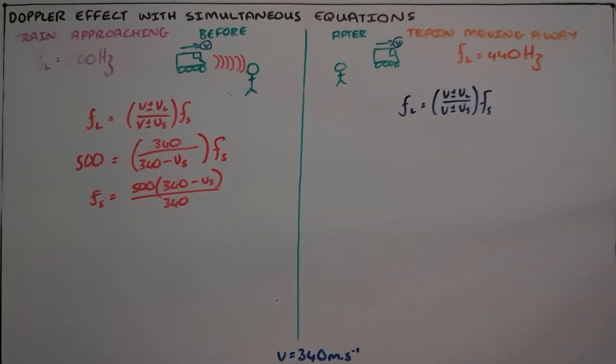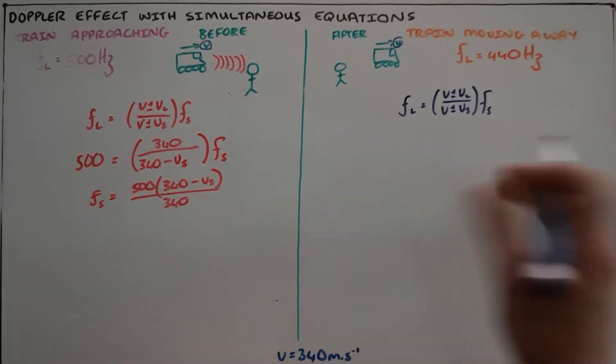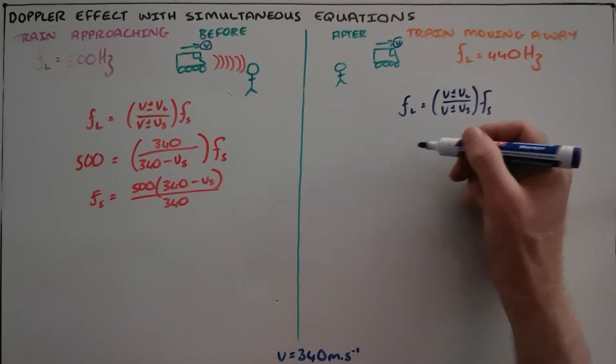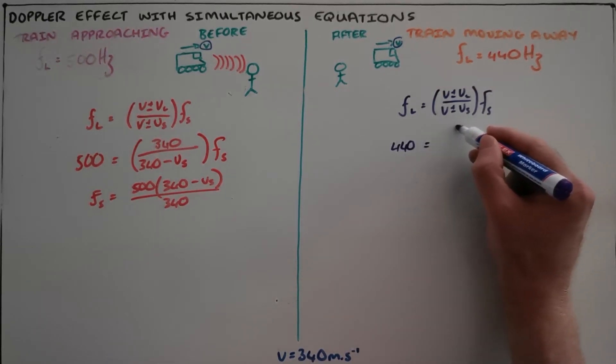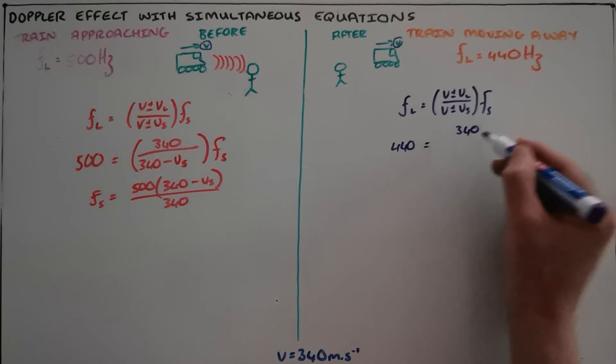We can then do the same thing for the second instance, that being the train moving away from this observer. We now know that the observed frequency is 440 Hertz. Once again, the observer is stationary, speed of sound in air remains the same.